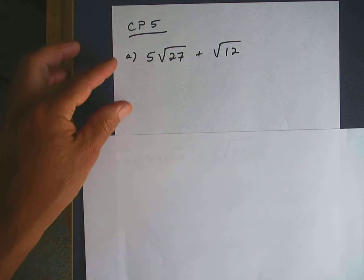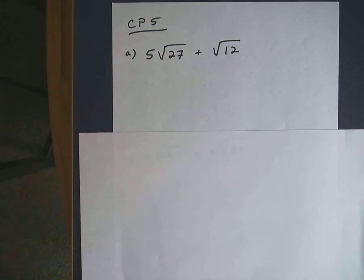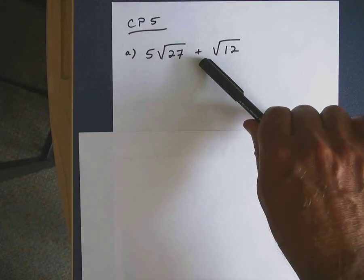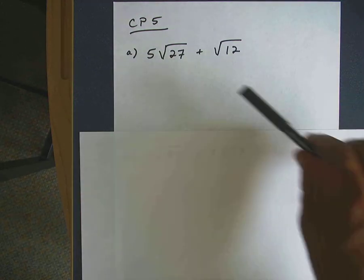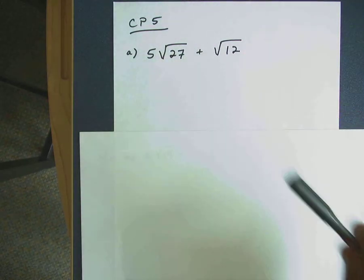Now we'll look at a couple of problems in checkpoint 5. These are similar to checkpoint 4. Notice we have the addition in here, so we can't combine them directly. But there still might be ways to simplify this.